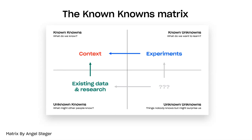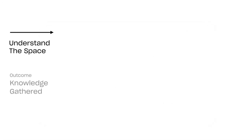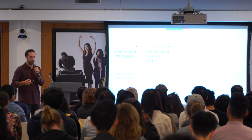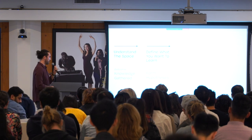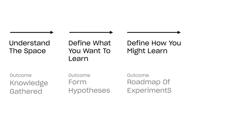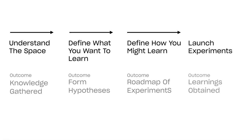To make it easier to visualize, here's a timeline. In the first step, you're understanding the space — gathering knowledge and context. In the second step, you define what you want to learn, using North Stars and KPIs to understand problems and form strong hypotheses. In the third stage, you define how you might learn — the actual design of experiments, what you'll design and how they build on each other in a roadmap. And in the fourth step, you launch those experiments and obtain the learnings.